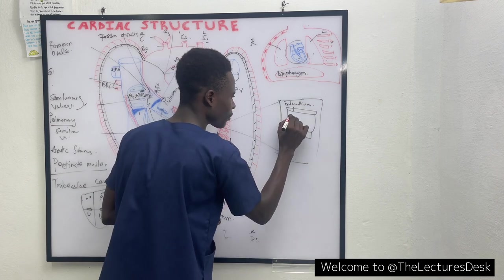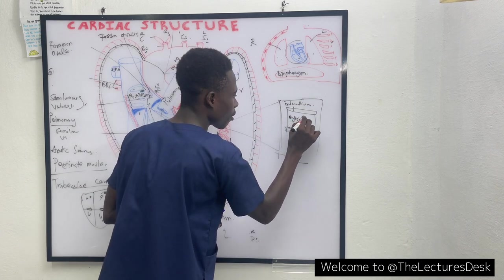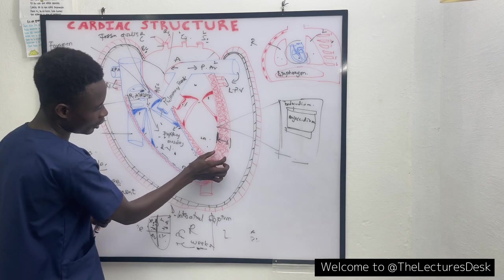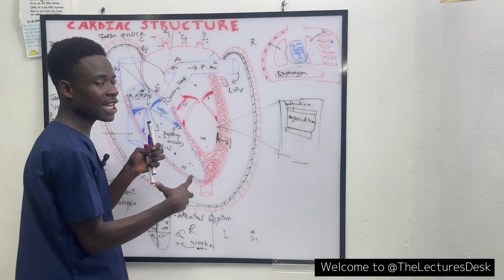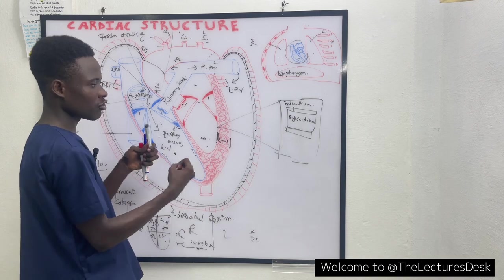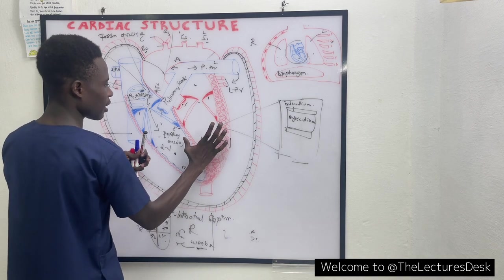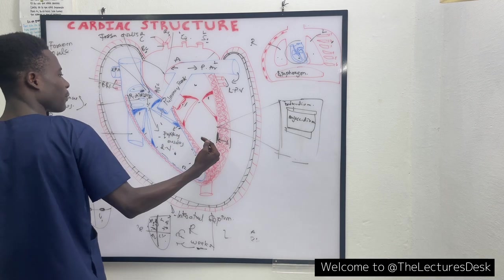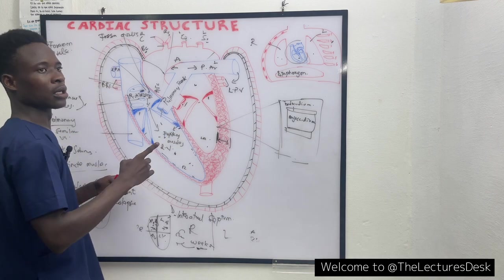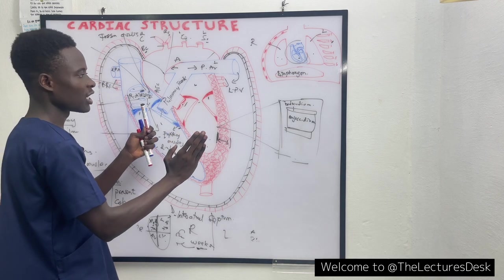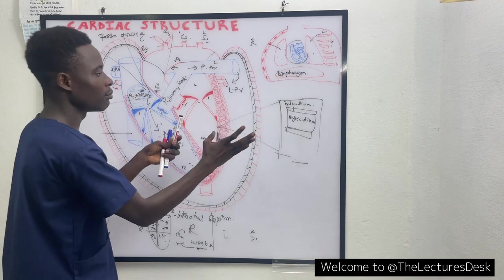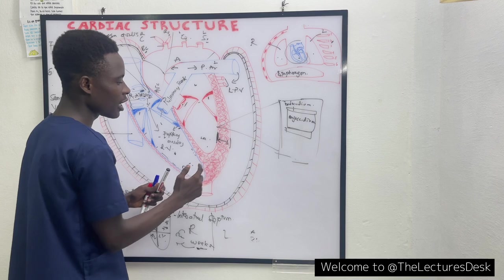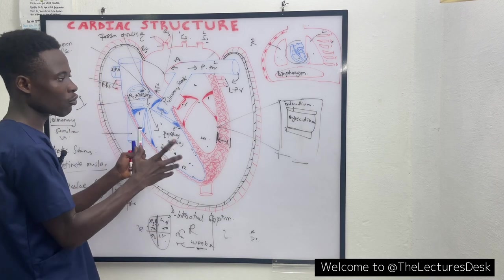The middle layer is the myocardium. The myocardium gets excited and contracts. When it contracts, it allows the ventricles to contract and pump blood to all parts of the body. At the atrium level, when the myocardium contracts, it pumps blood to the ventricles. So the main function of the myocardium is to undergo contraction.